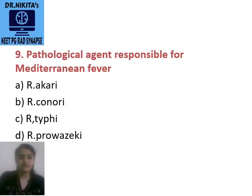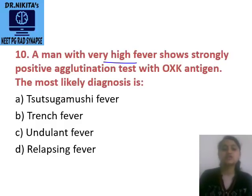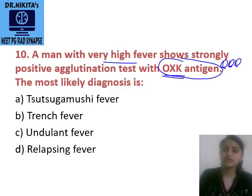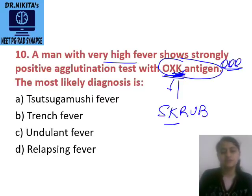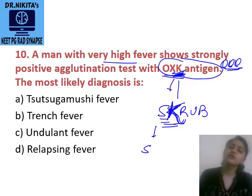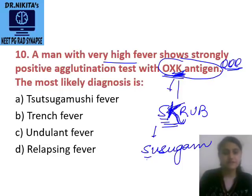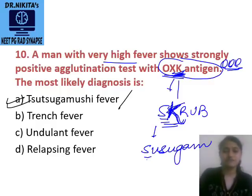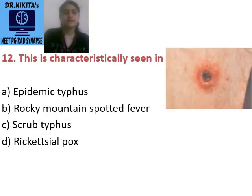Next: a man with very high fever shows strongly positive agglutination test with OXK antigen. Positive OXK is a frequently asked question. K stands for scrub — spell scrub as SK. Scrub typhus has OXK positive. Scrub typhus is caused by Orientia tsutsugamushi (formerly Rickettsia tsutsugamushi). So positive OXK means the answer is scrub typhus.